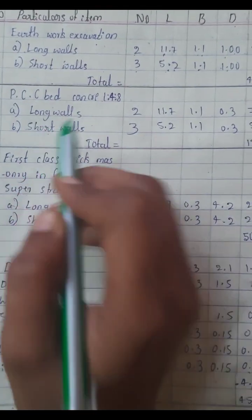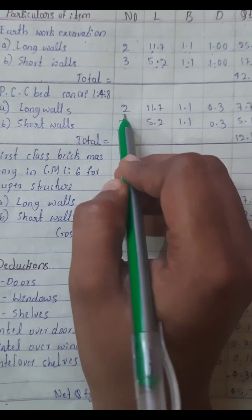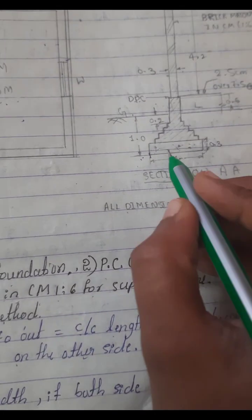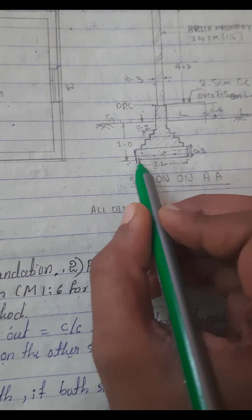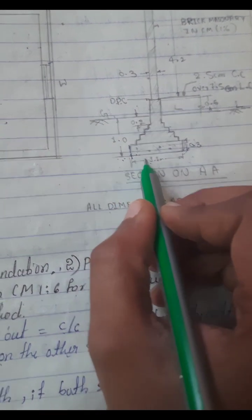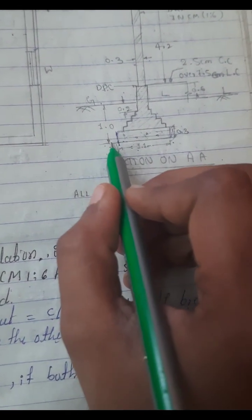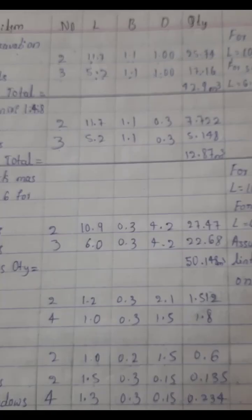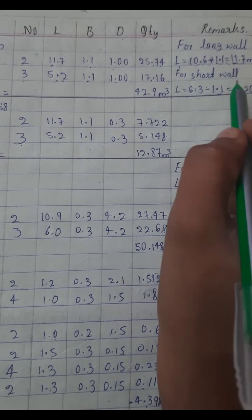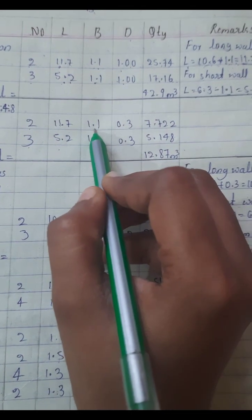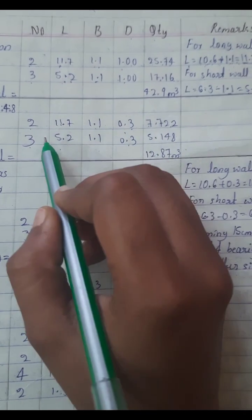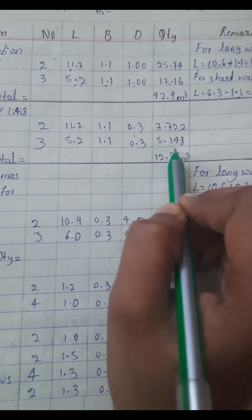The second item is PCC bed concrete. We use the same long wall (2 numbers) and short wall (3 numbers) with the same lengths. The width is 1.1m and depth is 0.3m for the long wall. For the short wall the width is 1.1m and depth is 0.3m. The quantities are calculated similarly.